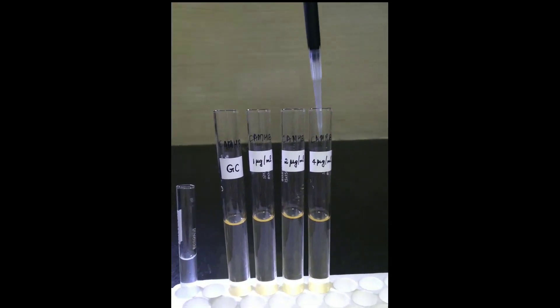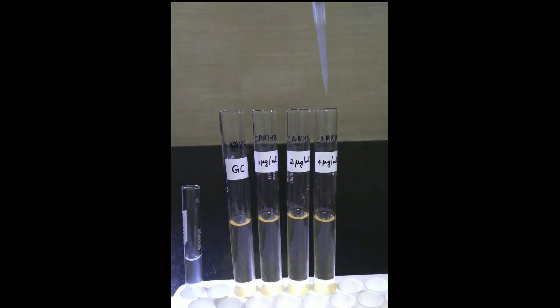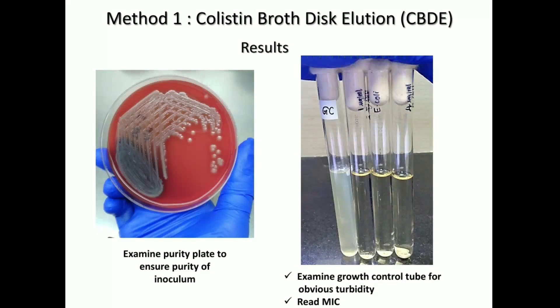Make a subculture from the growth control tube to check for sterility, and incubate for 24 hours. After incubation, examine the growth control plate for purity of the isolate. Next examine the growth control tube and the other tubes to read the minimum inhibitory concentration values.